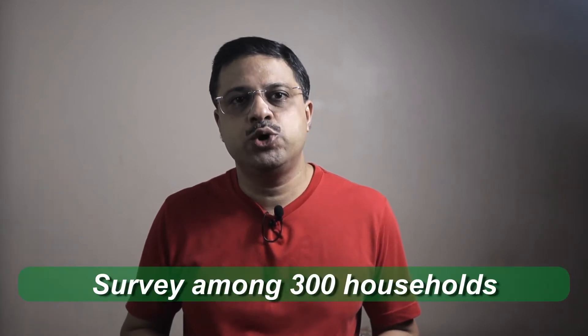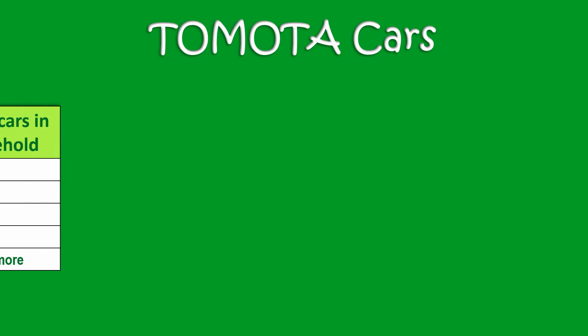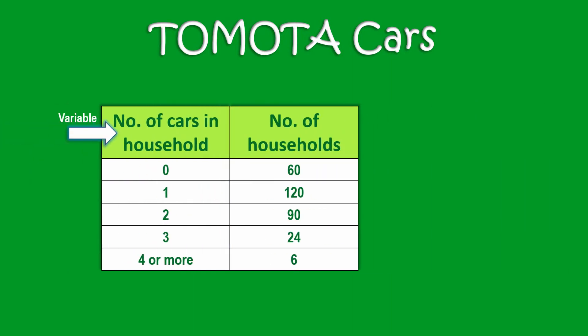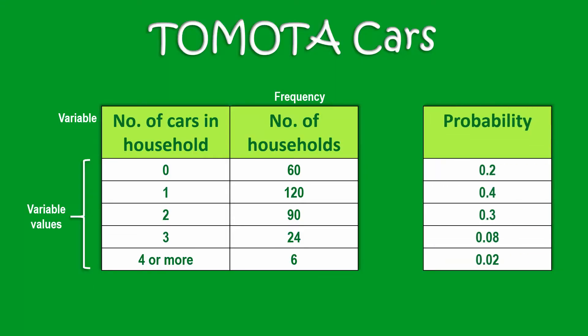Let's see what is happening with this car manufacturer. A car manufacturer, Tomota Cars, conducted a study in a region of a state. 300 households were chosen in such a way that they represented all the households in that state. The households were asked to state the number of cars owned by them. The variable here is the number of cars owned by a household, ranging from zero cars to more than four cars. Number of households represents the frequency for each value of the variable. If these households represented the ownership of cars in all the households in a state, then the likelihood of car ownership is represented by the probability column. The probability is calculated by dividing the number of households owning a specific number of cars by the total number of households, that is 300.